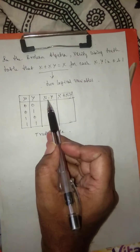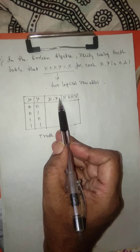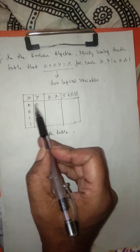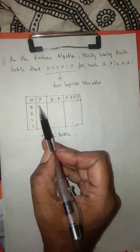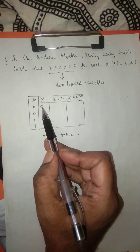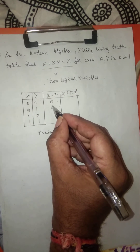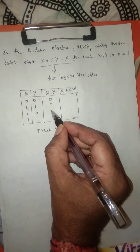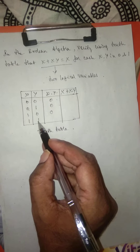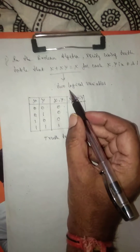Now we take the first row and perform an AND operation on the two logical variables. So: 0 AND 0 = 0, 0 AND 1 = 0, 1 AND 0 = 0, and 1 AND 1 = 1. This is the result for the x·y column.